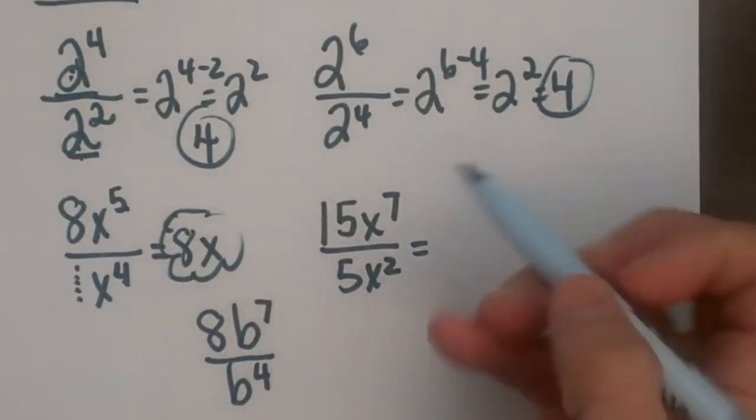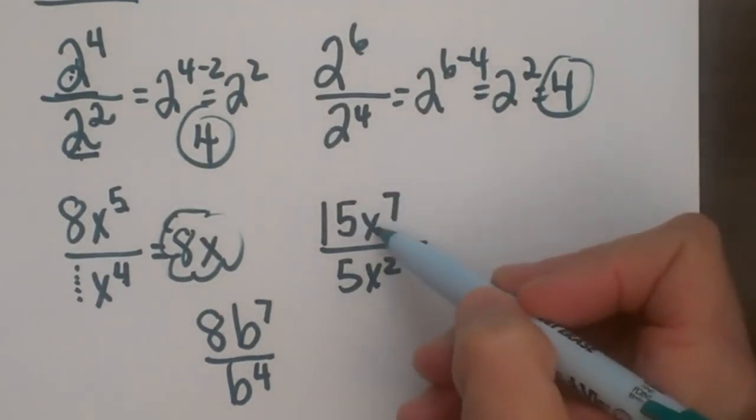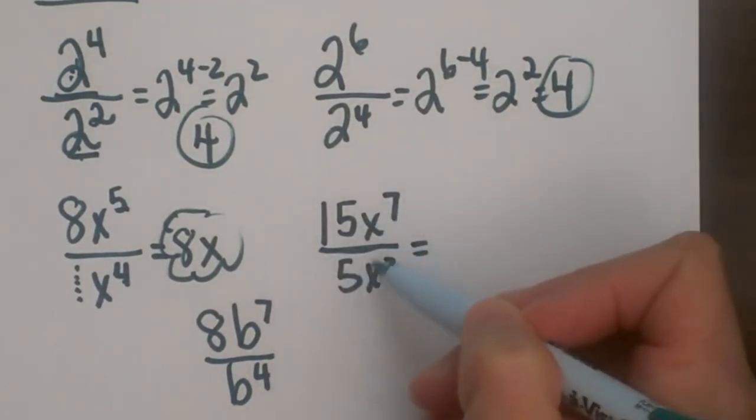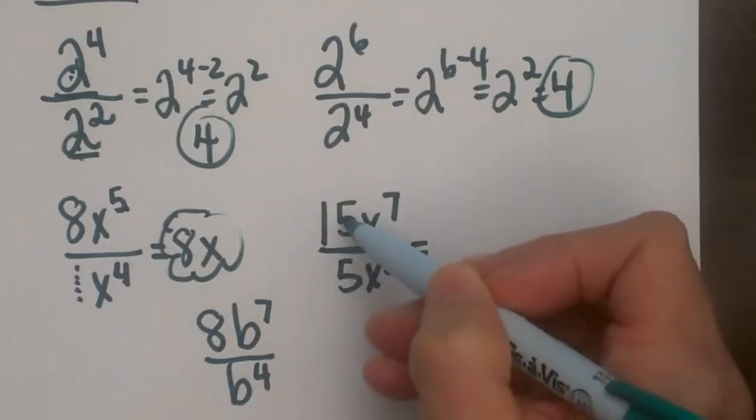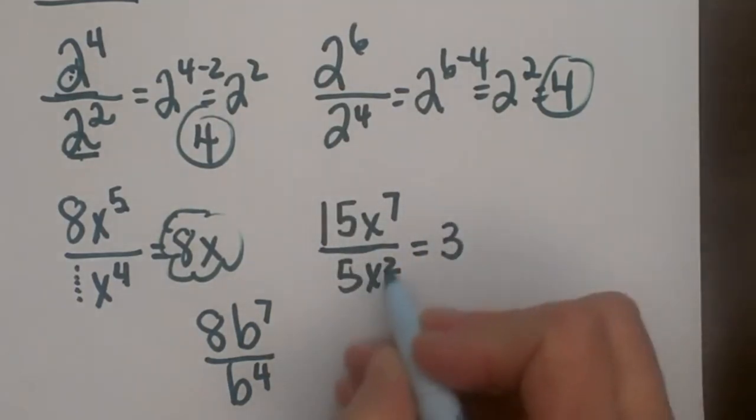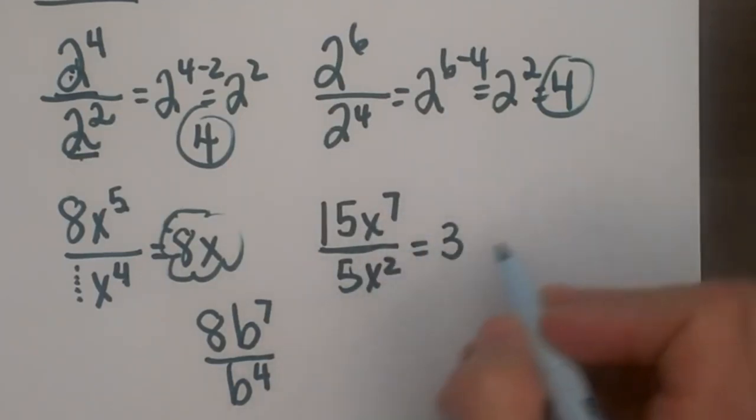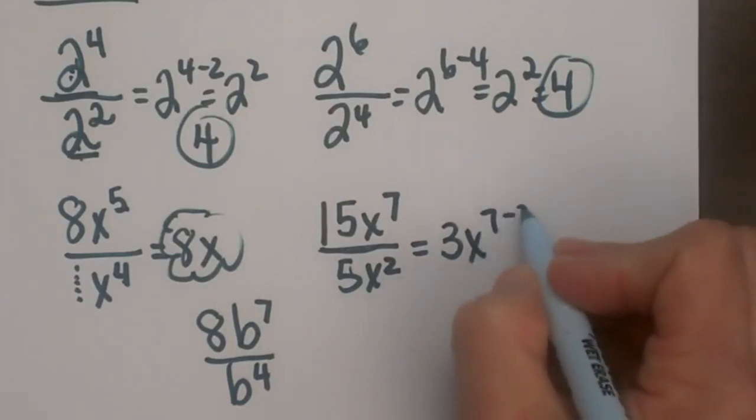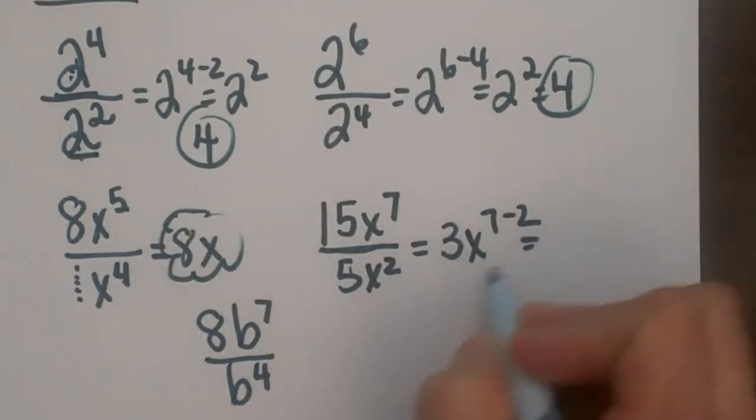Okay, let's try one with a coefficient. We have 15x to the 7th divided by 5x squared. Divide your coefficients, so they get the normal division. And then we're going to subtract 2 from the exponent. And we get 3x to the 5th.